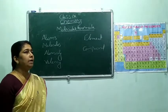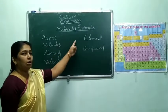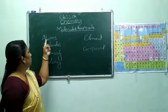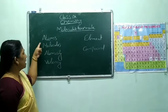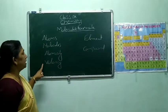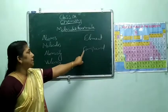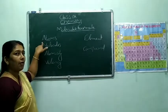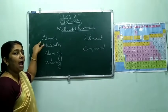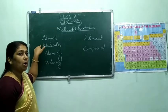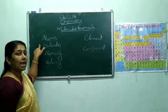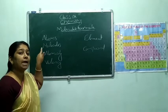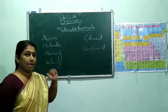We want to write the molecular formula. Before going to molecular formula, we want to know about atoms, molecules, atomicity, valency, elements and compounds. What is the definition of atoms? Atoms are the building blocks of matter and they are the smallest particle that can take part in a chemical reaction.